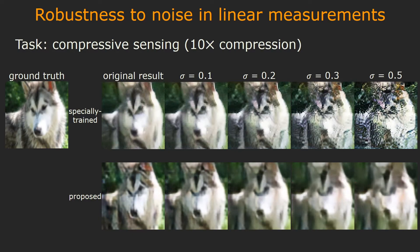In this slide, we compare the robustness to noise in the compressive sensing problem by gradually adding Gaussian noise to the linear measurements. The top row shows the reconstruction of the specially trained compressive sensing network, and the bottom shows the results of the proposed projection network. You can see that even though the specially trained network can achieve very good results in noise-free measurements, the performance starts to degrade rapidly once we introduce measurement noise.